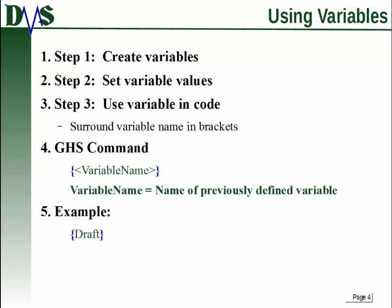How do you actually use variables in GHS? Step one, you have to create the variable. Step two, you have to set a value for that variable. And then finally step three, you get to use it in your code. The way you do that is you take whatever the name is for your variable and surround it in brackets. So the GHS command is your variable name surrounded by curly brackets.